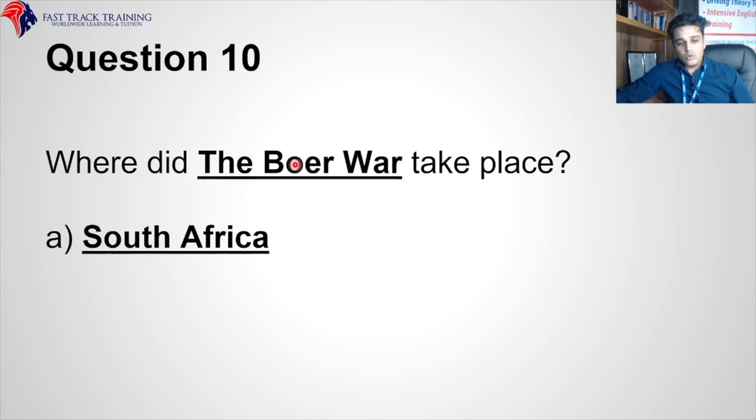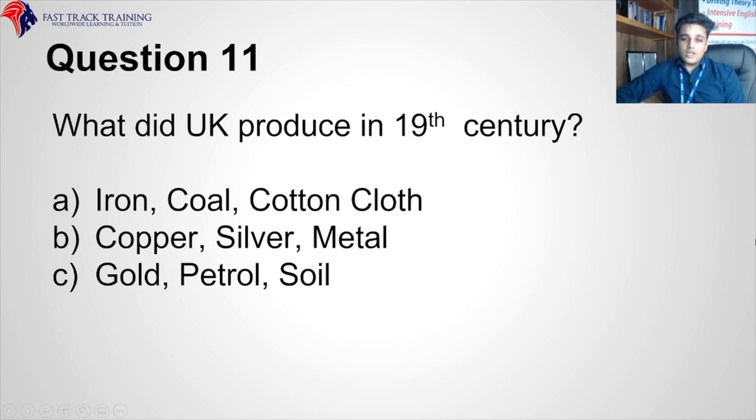What did the UK produce in the 19th century — iron, coal, cotton, cloth; or copper, silver, metal; or gold, petrol, soil? The correct answer is iron, coal, cotton, cloth — because of the Industrial Revolution.